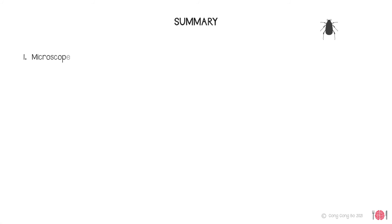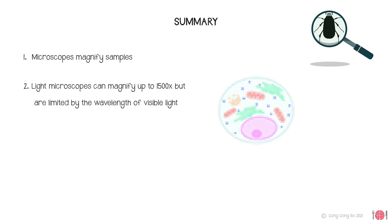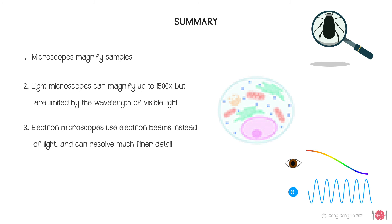So in summary, microscopes magnify samples. Light microscopes can magnify up to 1500 times but are limited by the wavelength of visible light. Electron microscopes use electron beams instead of light and can resolve much finer detail.